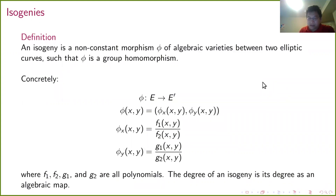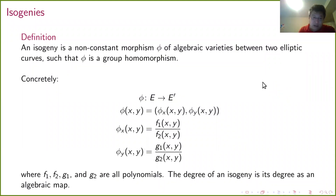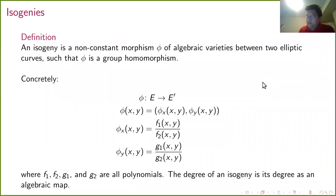Isogenies are maps between elliptic curves — the morphisms in the category of elliptic curves. An elliptic curve is an algebraic variety and a group, so a map between these objects must be a map in the sense of algebraic varieties and also a map in the sense of groups. Imposing both conditions together gives you the right thing: an isogeny is a morphism of elliptic curves, meaning it is a morphism in the sense of algebraic varieties and a homomorphism in the sense of groups.